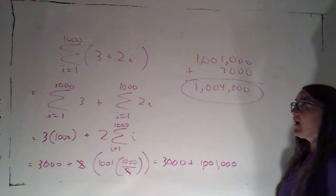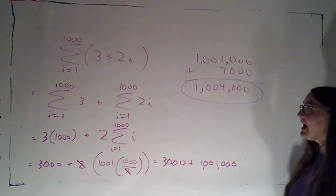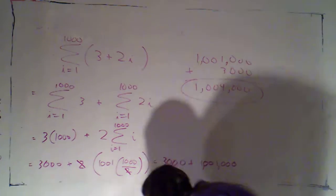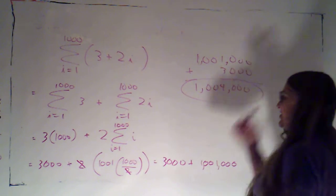We've got one million one thousand plus three thousand. This is one million four thousand. Very, very quick way of adding up a whole bunch of things. Okay, all right. Let's try another one.